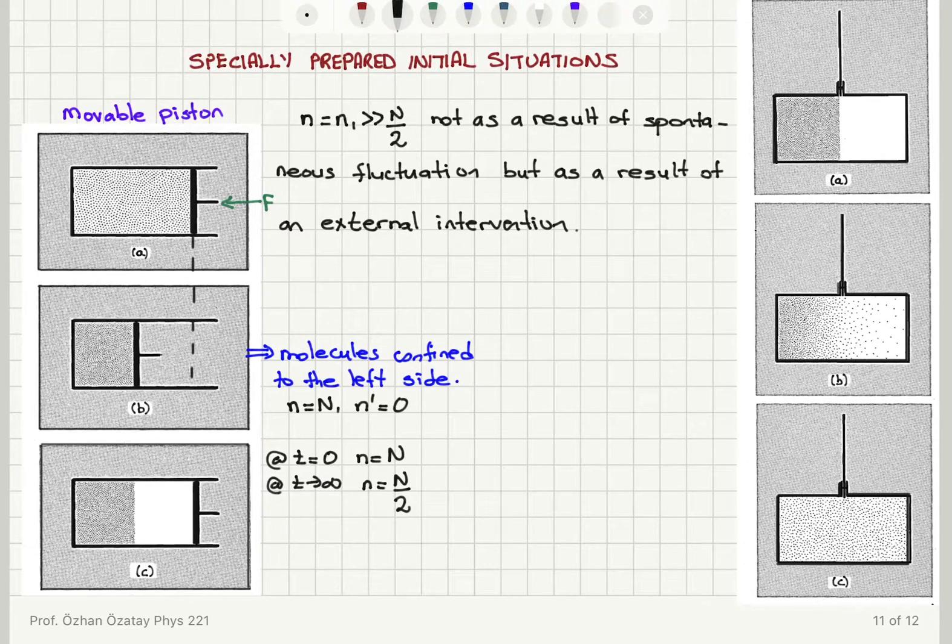Another way to do this is by using a removable partition. So the second technique I can use is removing a partition. The box initially had a partition to start with and all the molecules were on the left-hand side. So I had n equals capital N, n prime equals 0. And then what I did is I removed this partition. So I applied a force F, the partition has been removed.